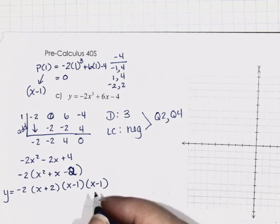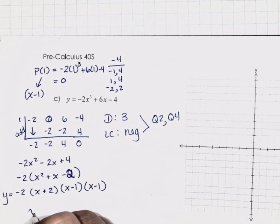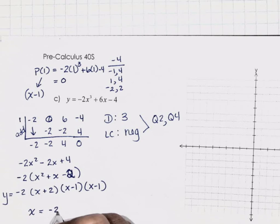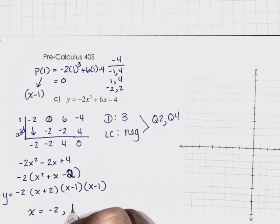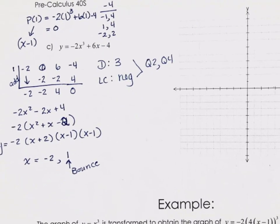What's happening at this x-intercept? There are two of them — we've got a bounce. So for my x-intercepts I'm at negative 2 and positive 1. But at positive 1, I have a bounce. I need my y-intercept too.